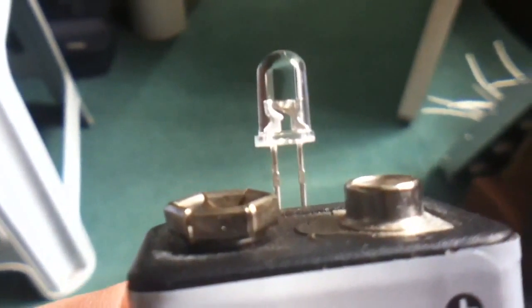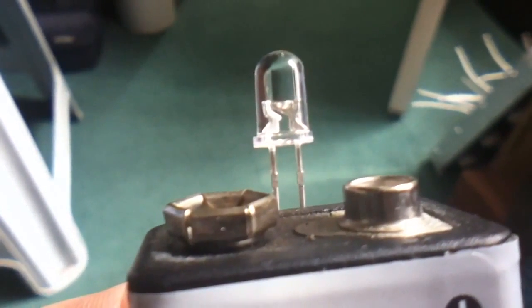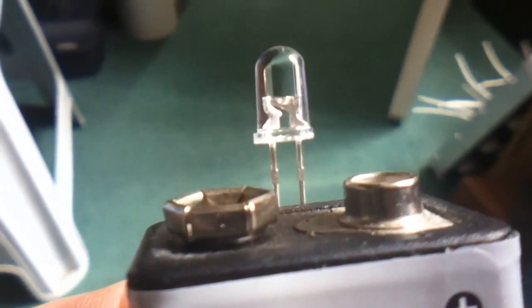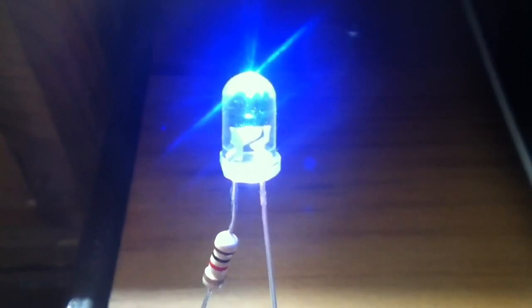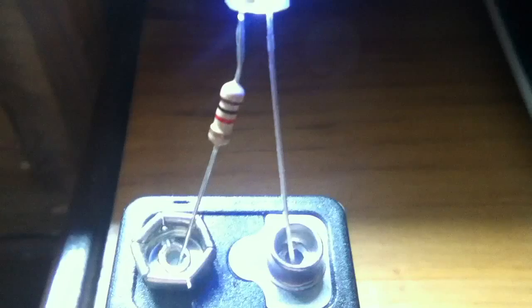The problem is above a certain voltage an LED is a dead short, so it just draws an enormous current and burns itself up. Now one way to limit the current is to use a resistor.